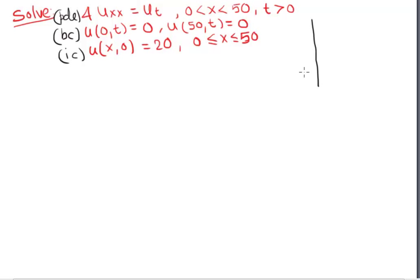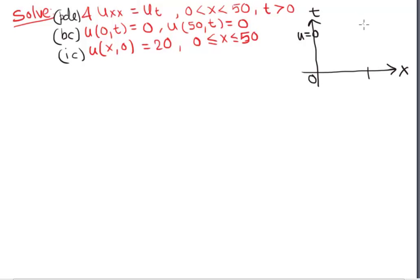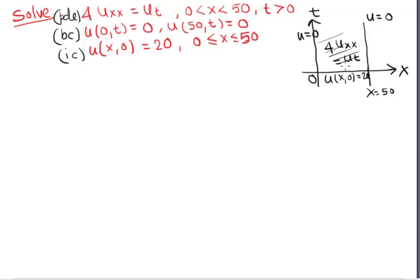We can represent this heat conduction problem with x as the spatial coordinate and t as time. At x=0 the temperature u is 0, and at x=50 the temperature u is also 0. The initial condition is u(x,0) = 20, and the problem is to find u(x,t) at any time t.